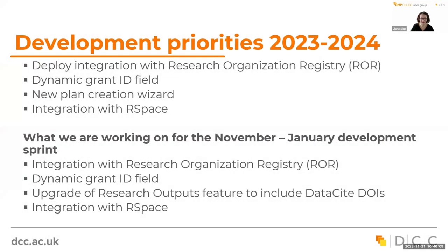Before moving on to the interoperability workshop, I want to give a quick overview of where we are with these features. Most are at the stage where we're writing detailed feature specifications. A lot of development work has been done in the common roadmap code and in DMP Online, but we lack detailed specifications and don't always know why things were done one way or another. It's important to document why changes are made and how.